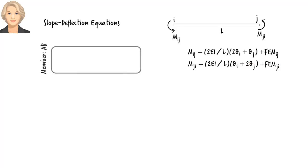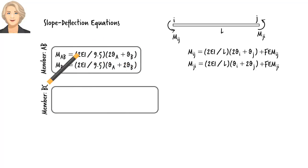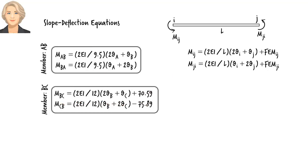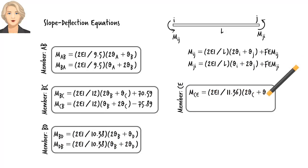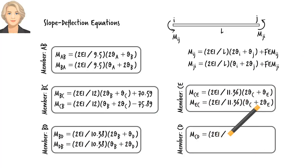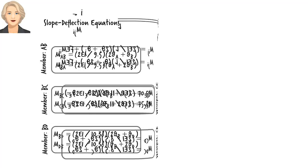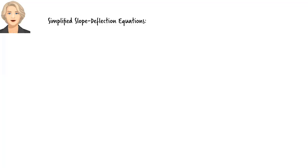Applying them to member AB, we get... For BC, we get... The equations for BD are... And for CE and CD, we have... We can simplify the slope deflection equations like this.